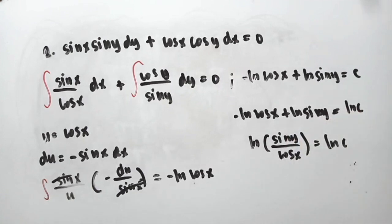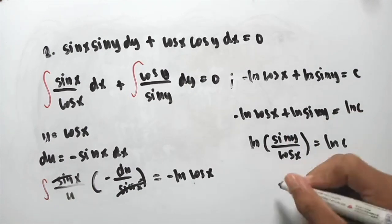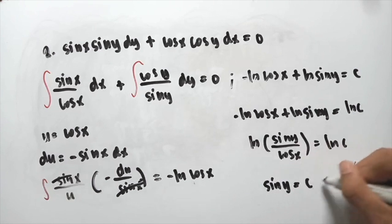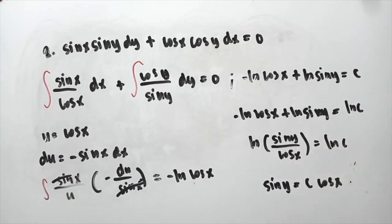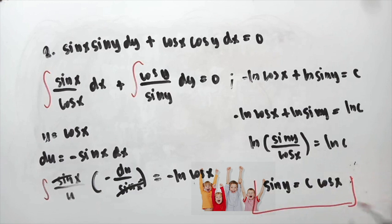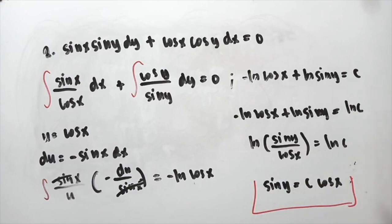Simplifying further, the final answer is sin y = c · cos x. This is our final answer. This intermediate form is also correct, but as mentioned, the simplified form is preferred.